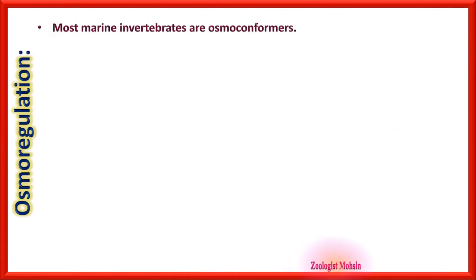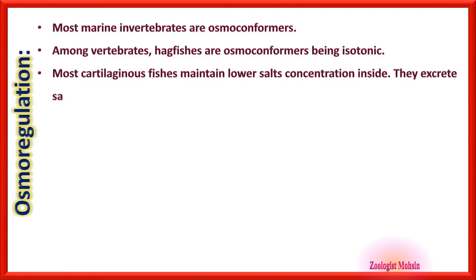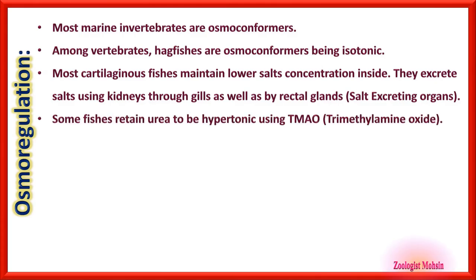Most marine invertebrates are osmoconformers. Among vertebrates, hagfishes are osmoconformers being isotonic — that is the distinction for hagfishes. Most cartilaginous fishes maintain lower salt concentration inside and excrete salt using kidneys, through gills, and by rectal glands, which are salt-excreting organs. Some fishes retain urea to be hypertonic using TMAO.